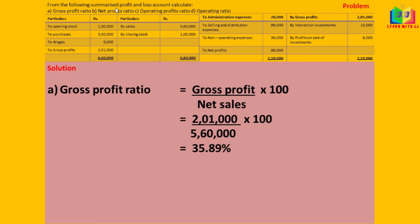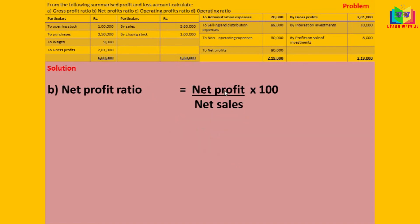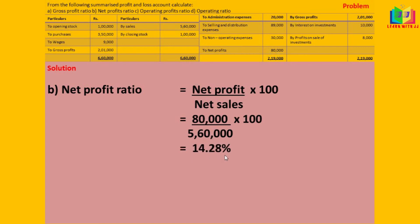The next one is net profit ratio. The formula is net profit divided by net sales into 100. In this problem, net profit is given as 80,000 and net sales is 5,60,000. Substituting in the formula, we get 14.28%.